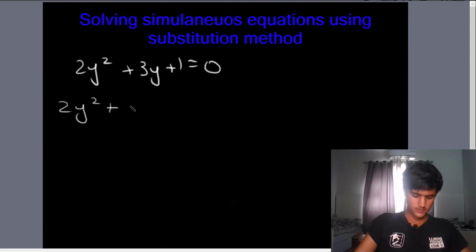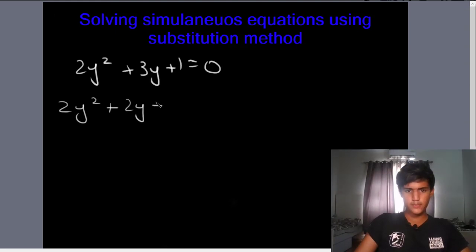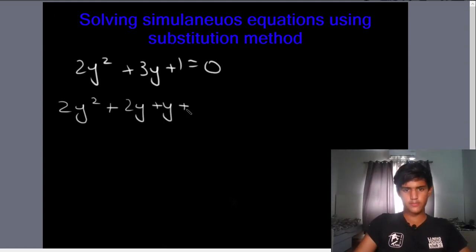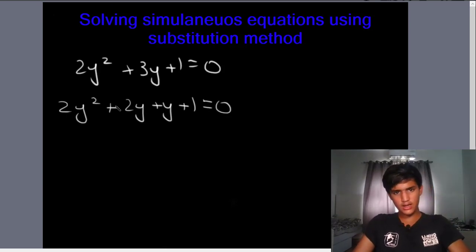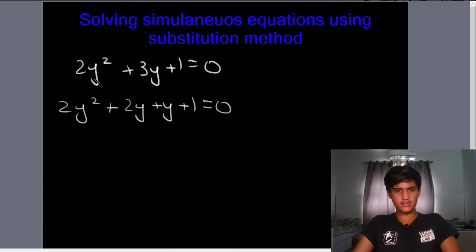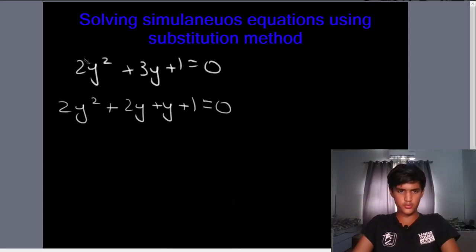We are going to factor this by splitting the middle term: 2y squared plus 2y plus y plus 1 is equal to 0. We choose 2y and 1 because 2y plus y equals 3y, and their product equals 2 times 1, which matches the product of the leading coefficient and constant term.